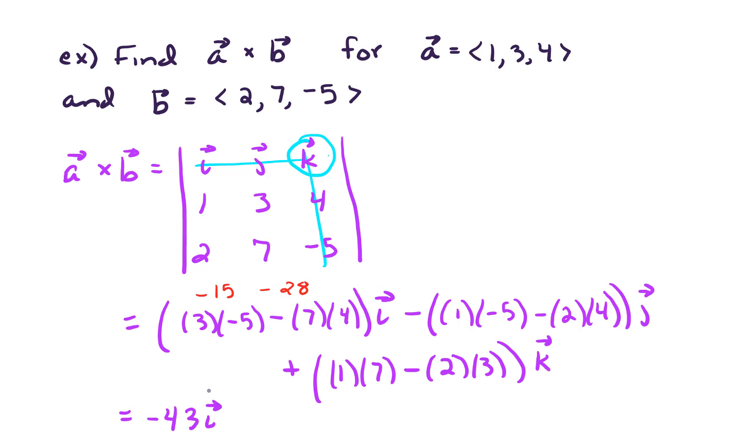we have negative 5 minus 8. So that would be negative 13. And then the negative out in front, that gives us a positive 13J. And lastly, we have 7 minus 6. That gives us 1K. So I could just write that as K or 1K either way. So you can write this with the IJK or you could also write this with the angled bracket notation negative 43, 13, 1.